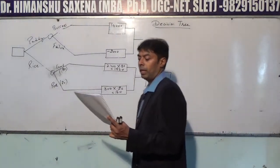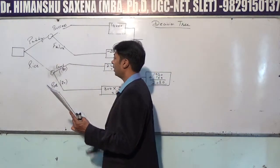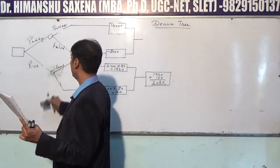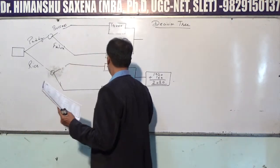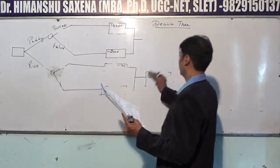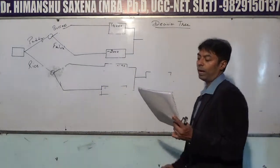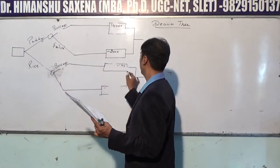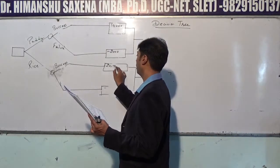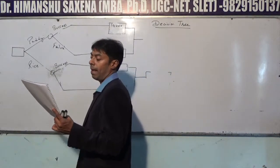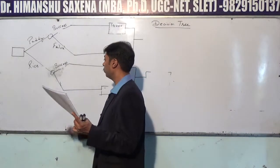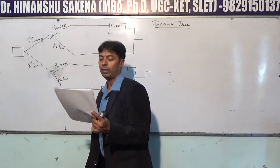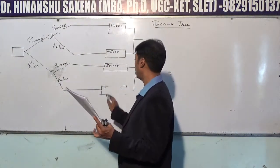If he stocks rice and it is a success, he hopes to earn a profit of Rs. 20,000. But if the rice crop is a failure, he will lose Rs. 5,000. So for rice: success gives +20,000 and failure gives −5,000.